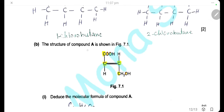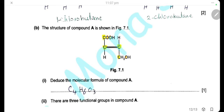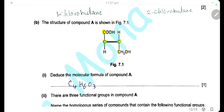The structure of compound A is shown. The molecular formula shows the type and number of each atom in the molecule. Compound A has 4 carbons, 6 hydrogens, and 3 oxygens, giving the molecular formula C₄H₆O₃.